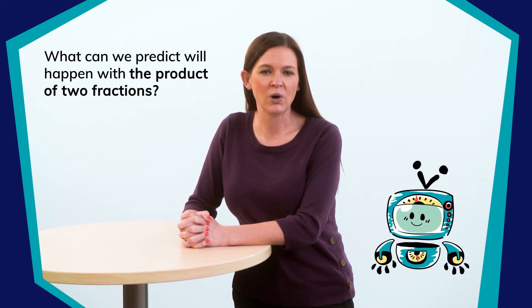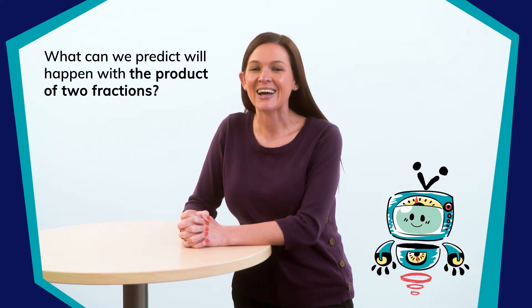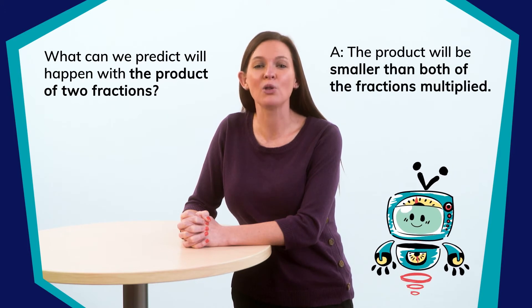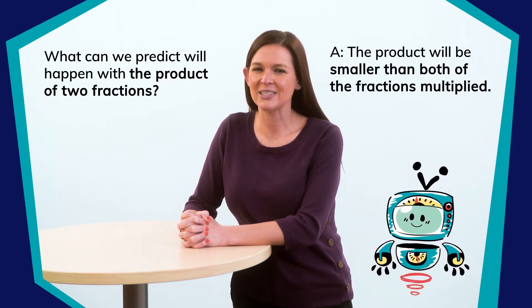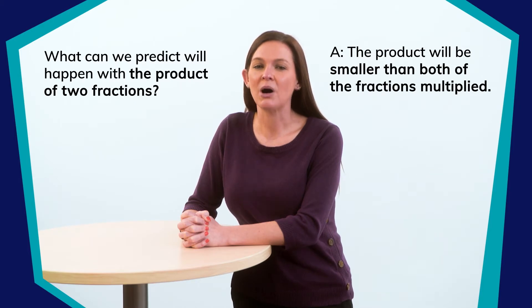So what can we predict will happen with the product of two fractions? Exactly! The product will be smaller than both of the fractions multiplied. I wonder why this is? Let's look at a model to better understand what's happening when we multiply fractions by fractions.